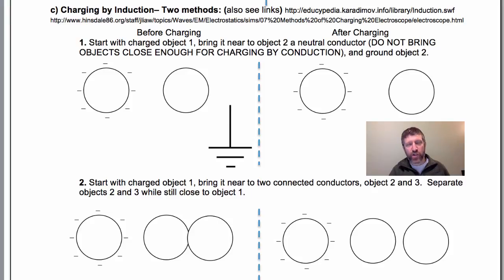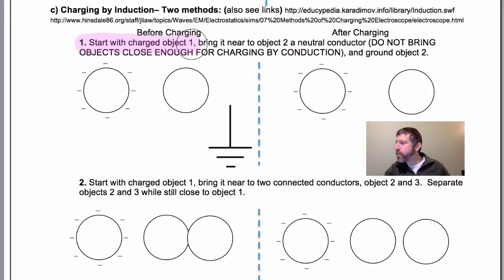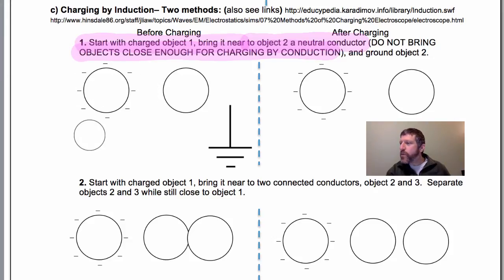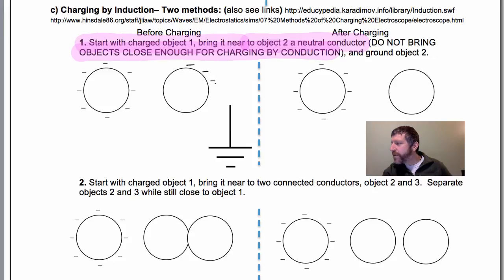Let's now talk about charging by induction. This is the most confusing method, and some students have a hard time with it, but it is quite simple if you understand what's going on. There are two ways of charging by induction. The first method: you start with a charged object and just bring it near — don't touch — a neutral conductor (object two). What happens is this object becomes polarized: the electrons get pushed over to one side, giving up to eight nanocoulombs on that far side.